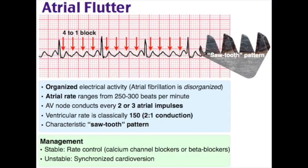Atrial dysrhythmias: atrial flutter is one irritable atrial focus firing at a fast rate, usually over 300 bpm. Similar to AFib, there is increased risk for atrial thrombus formation leading to cerebral or systemic embolization (stroke). It may occur alone or as an interval rhythm between sinus tachycardia and atrial fibrillation.